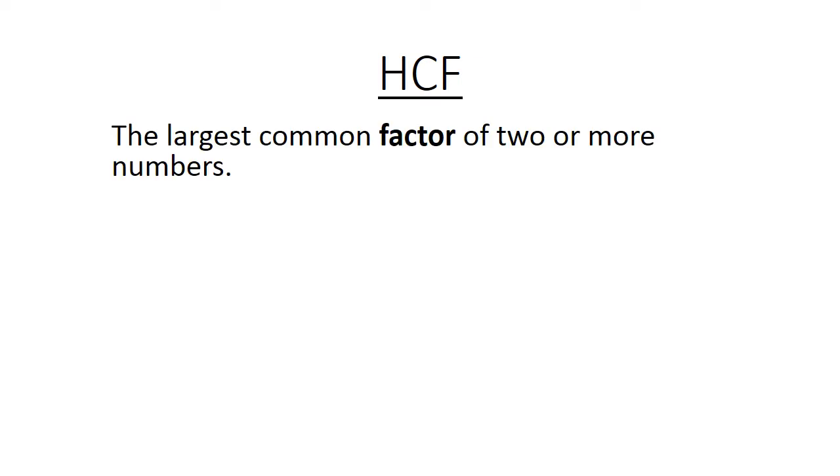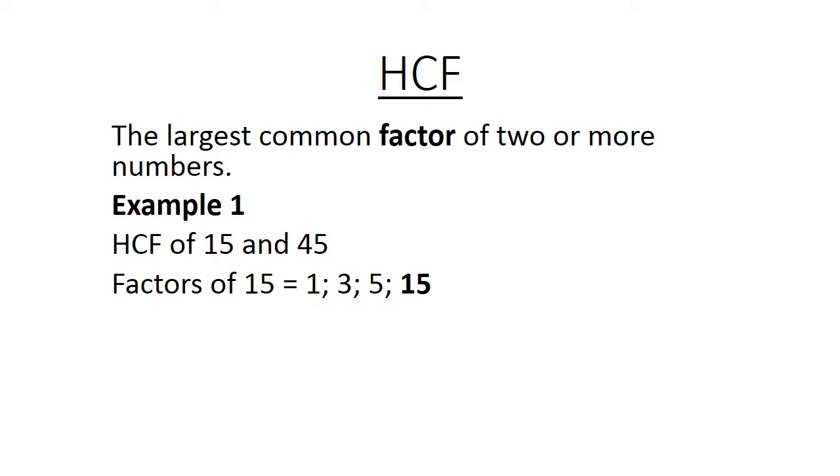Highest common factor. The largest common factor of 2 or more numbers. Example 1. Highest common factor of 15 and 45. Factors of 15 are 1, 3, 5 and 15.